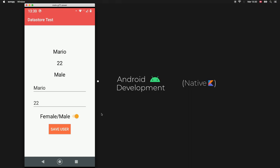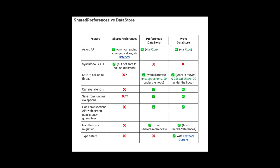Right before we jump into the project, I just want to show you a few of the benefits of using DataStore. The first benefit is that it is safe to call on the UI thread because the work is moved to Dispatchers.IO under the hood. It can also signal errors, is safe from runtime exceptions, has a transactional API with strong consistency guarantees, and finally it also handles data migration.